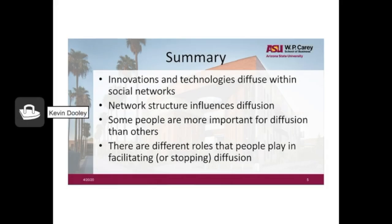In summary, innovations and technologies diffuse within social networks — networks of people and networks of organizations. Network structure influences diffusion: some structures allow quick diffusion within a small group but make it difficult to get ideas from the outside, while others have broad span and connect otherwise disconnected groups through boundary spanners. Some people are more important for diffusion than others, depending not just on formal power or expertise, but also their specific place within a social network. Finally, there are different roles that people play in facilitating or stopping diffusion of innovation or technology through a network. Thank you.